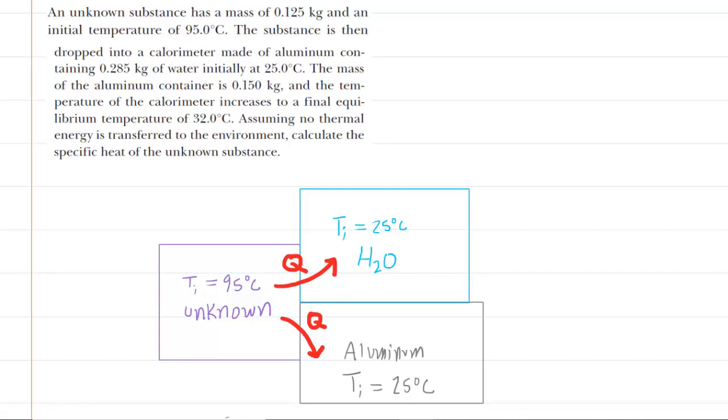In this question, we have an unknown substance in contact with water and aluminum. The unknown substance begins initially at a higher temperature and the water and aluminum are at lower temperatures, and we're asked to determine the specific heat of this unknown substance.